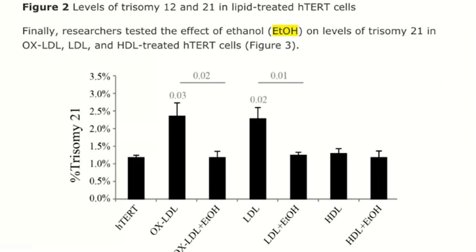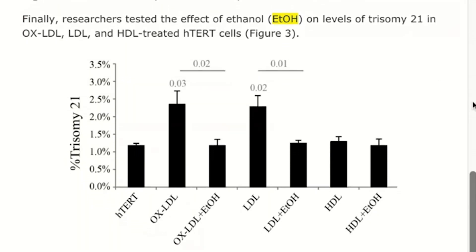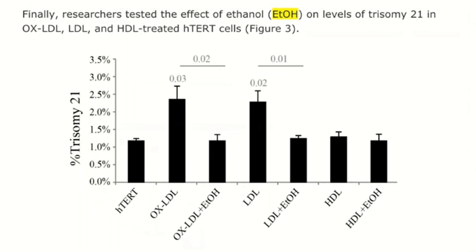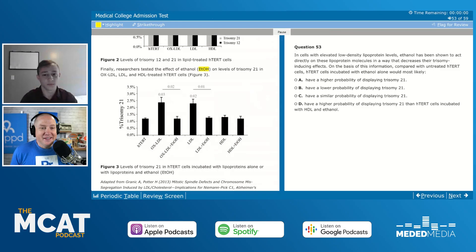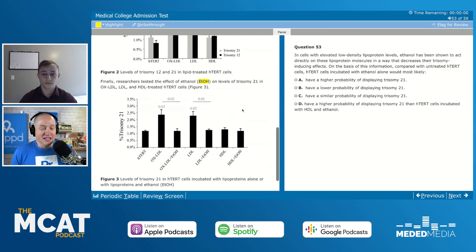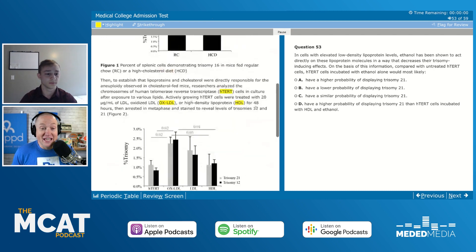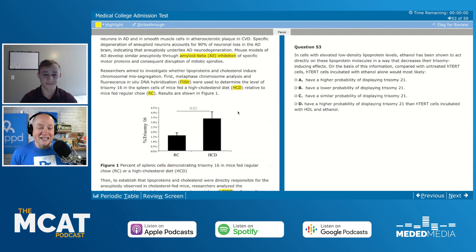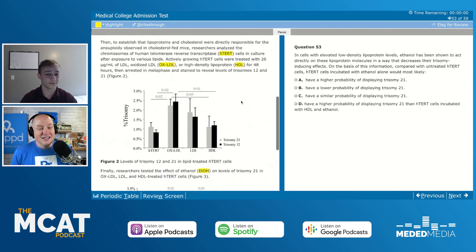Looking at figure three, we see that the addition of ethanol is actually reducing the amount of trisomy 21 in those LDL species, but not with the HDL. For some students this is a good passage because they love all the graphs, a bad passage because they hate graphs and don't know how to interpret them. Is there a trick to getting good with reading graphs quickly?